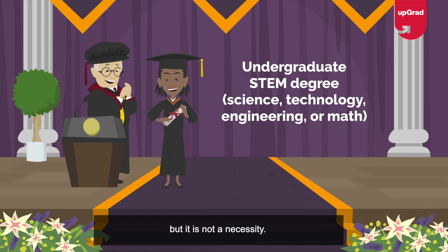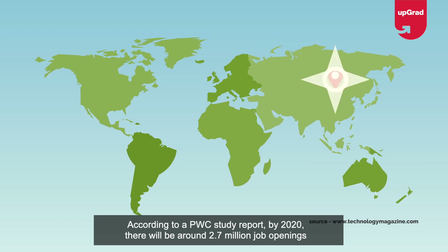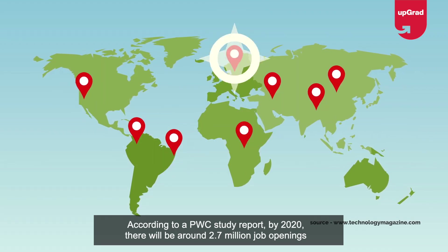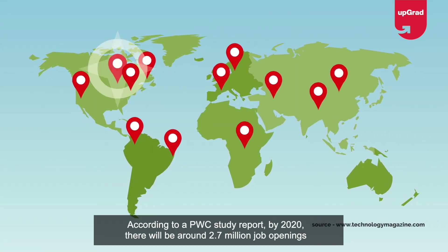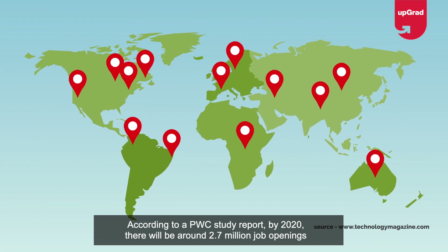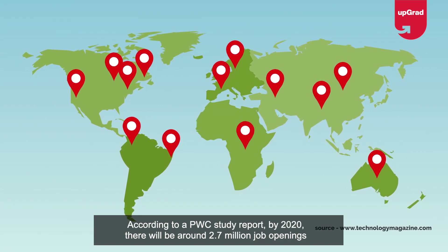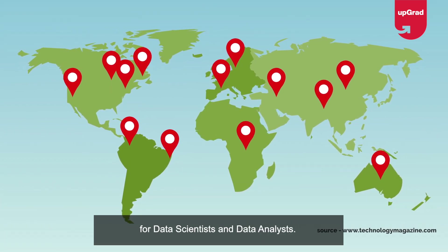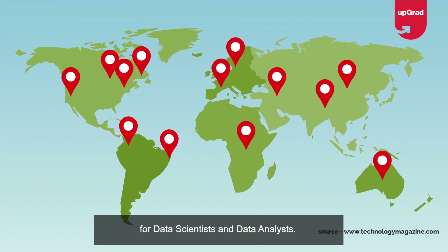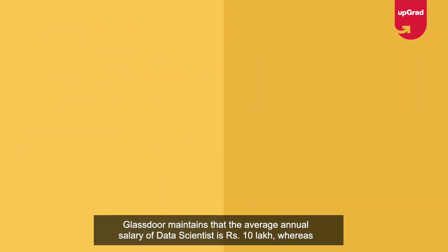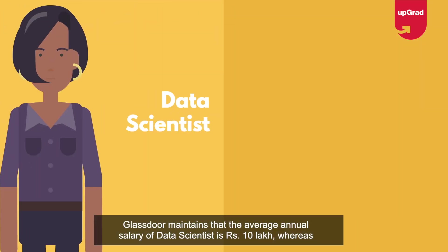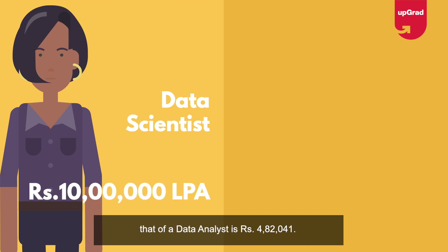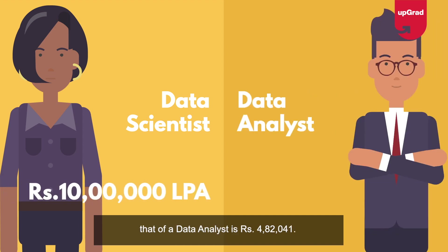Regarding salary: according to a PwC study report, by 2020 there will be around 2.7 million job openings for data scientists and data analysts. Glassdoor maintains that the average annual salary of a data scientist is rupees 10 lakh, whereas that of a data analyst is rupees 4 lakh 82,041.